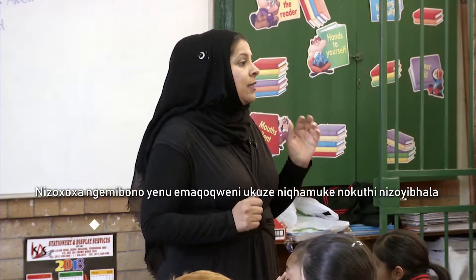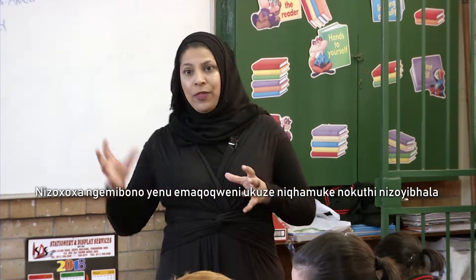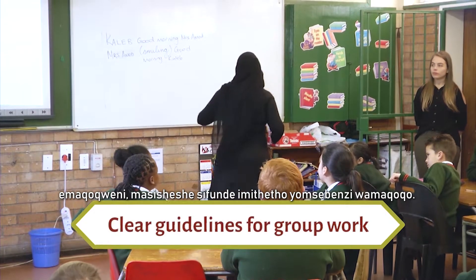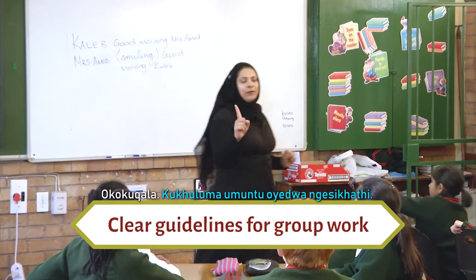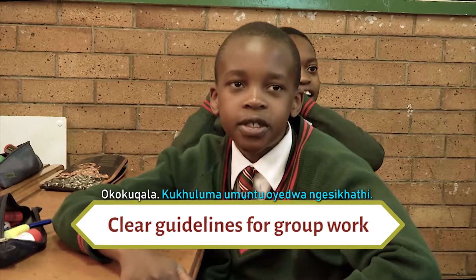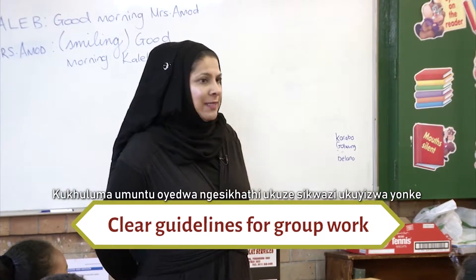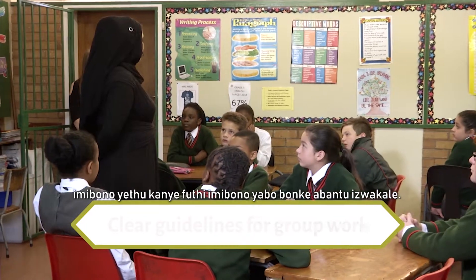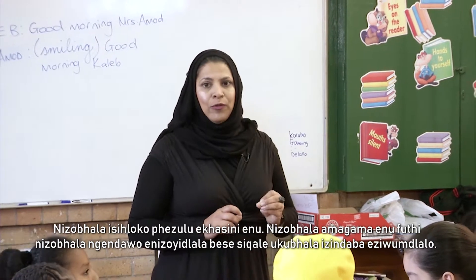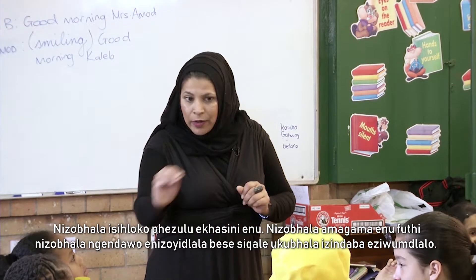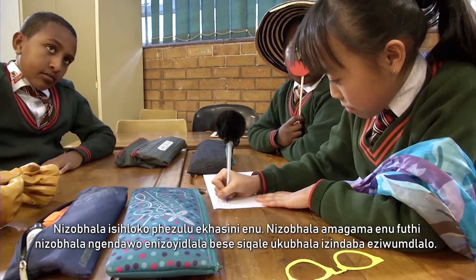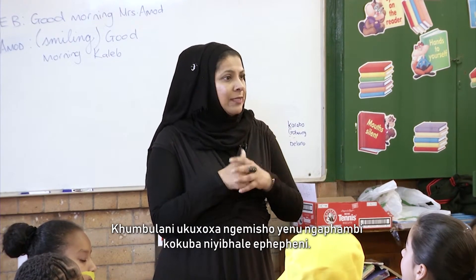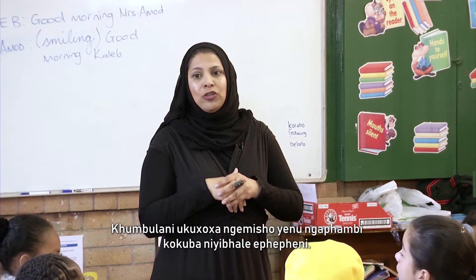You are going to brainstorm ideas in your group to come up with how you're going to write your dialogue. Before we start doing dialogues in groups, let's quickly run through some rules for group work. First one: one person speaks at a time, so that we can all hear our opinions and everybody's thoughts get heard. You're going to write the topic at the top of your page, write each of your names and the role you're going to play, and then we're going to start writing scripts. Remember to talk your lines out before your scribe actually puts them to paper.